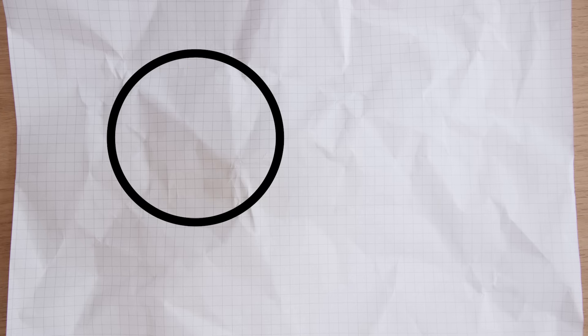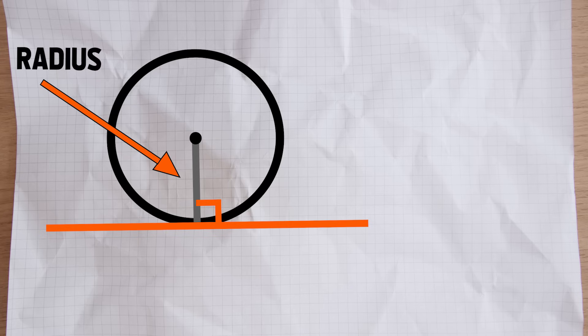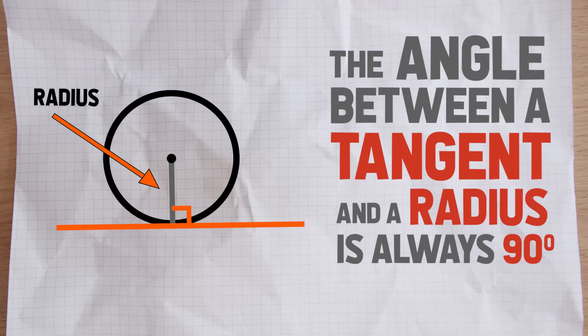Now we need to talk about tangents. What is a tangent? A tangent is a line that just touches the circumference - it doesn't go into the circle, it just touches that circumference. And there are three theorems that involve tangents. The first is that if you take a line from the centre of the circle to meet the tangent at the circumference, it will always meet at a right angle. That line from the centre of the circle to the circumference we call the radius - or radii if you're talking about more than one of them. So the rule is that the angle between a tangent and a radius is always 90 degrees.